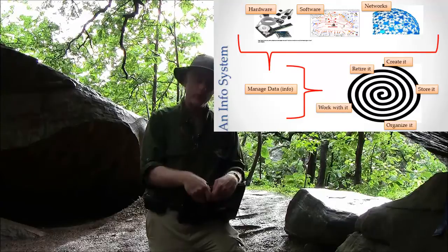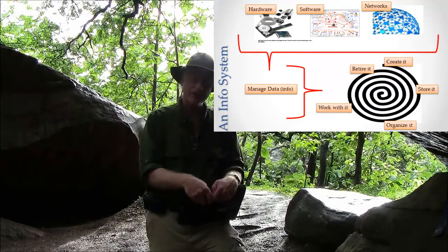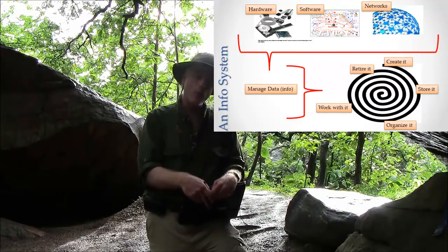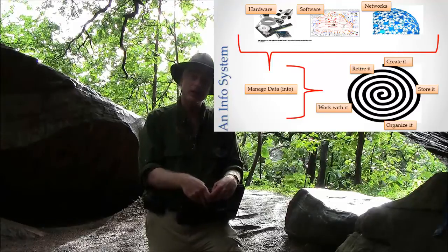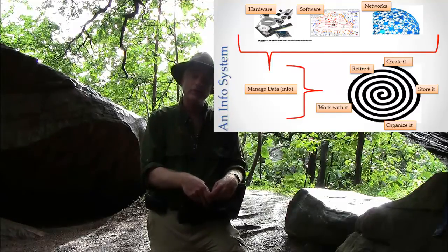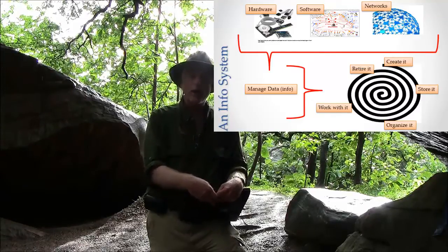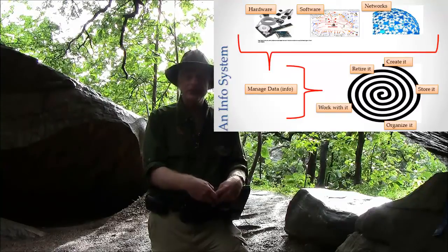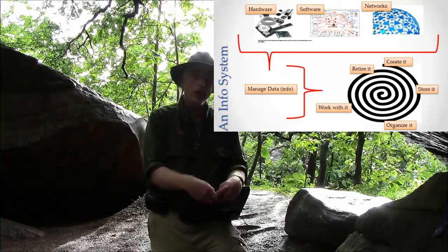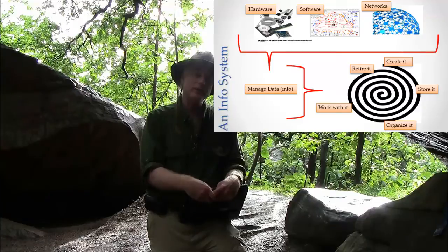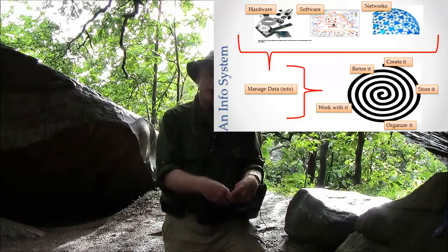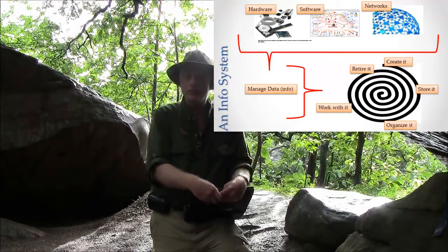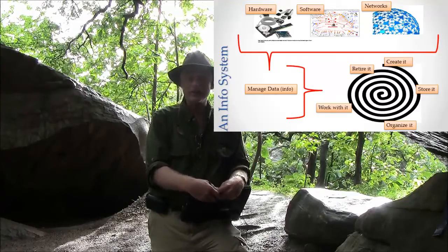The main thing then with those virtual abilities is managing information. We're going to talk a lot more about the life cycle of information later, but what I want you to understand from the start here is that when I say that information systems allow you to manage information, what I mean is that they allow you to do everything from the initial creation of information through the eventual disposal of that information and everything in between.